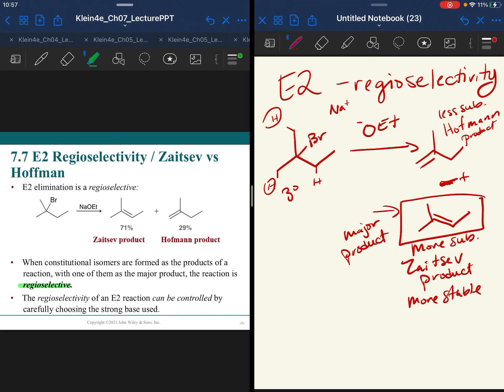If it only made the Zaitsev product, we would call that regiospecific. So for instance, when we have our SN2 inversion of stereochemistry, that is stereospecific. It always inverts the stereochemistry. It's not just a major product. In this case, you do get some of both, but it is selective for the more stable Zaitsev product.